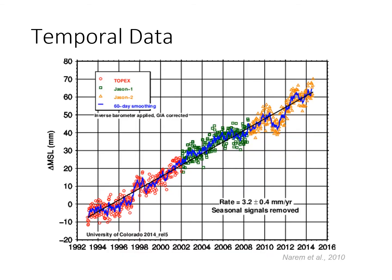This is temporal data from different satellites beginning in 1992 to the present. The blue line is a 60-day smoothed average. The data shows sea levels are rising at a rate of about 3.2 millimeters per year.